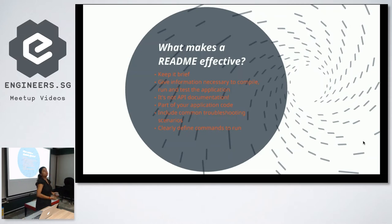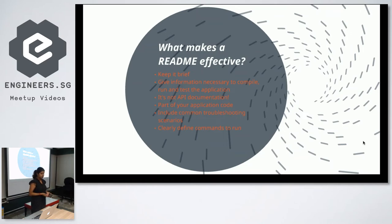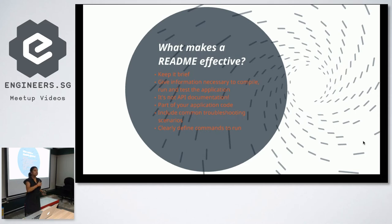As a consultant, I often go into legacy applications and don't want to bumble around the code figuring out how things work. The README should give information necessary to compile, run, and test the application — including prerequisites, common troubleshooting scenarios, and common problems people run into. It should be constantly updated; finding something in the README that no longer exists in the code is quite discouraging.